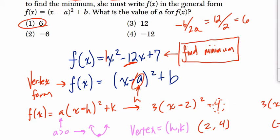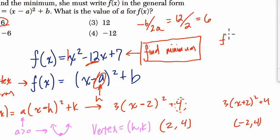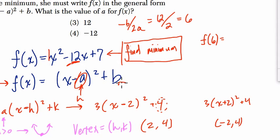All right. So, if we plug in 6 to our equation, if we find f of 6, we'll do that real quick. If we find f of 6, we can find the y value of the minimum, which is really b, or k, right? That's the y value of the vertex.